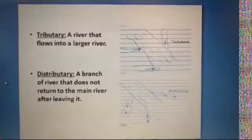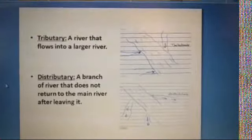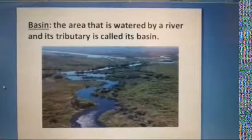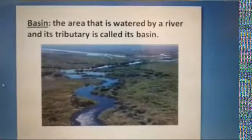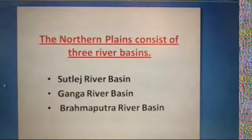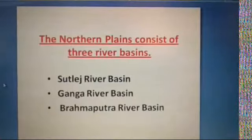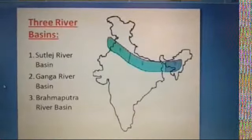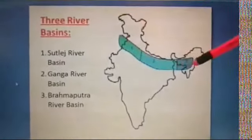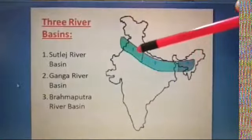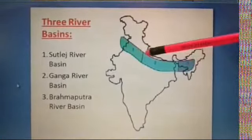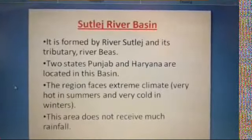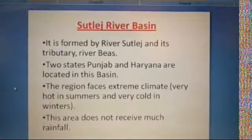Now we will learn about the three different basins. The Sutlej Basin is in the extreme western part. The middle part is the Ganga River Basin. The eastern part is the Brahmaputra River Basin. On the map, the shaded portion from Punjab is number one, the Sutlej River Basin. Number two, the middle portion, is the Ganga River Basin. And number three, the eastern part, is the Brahmaputra River Basin.